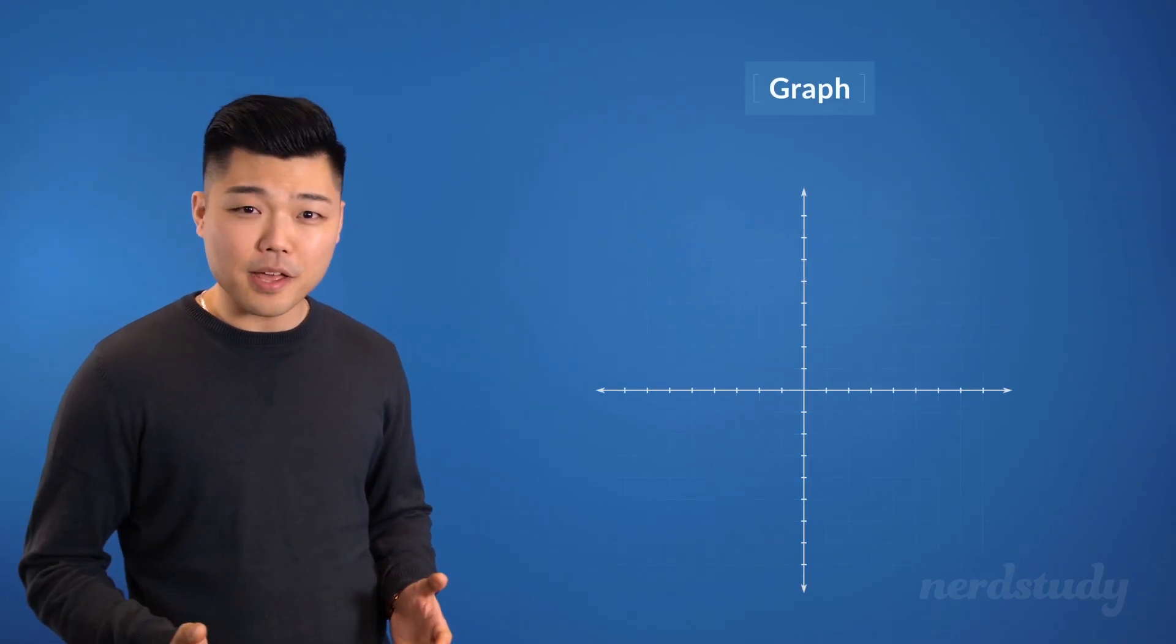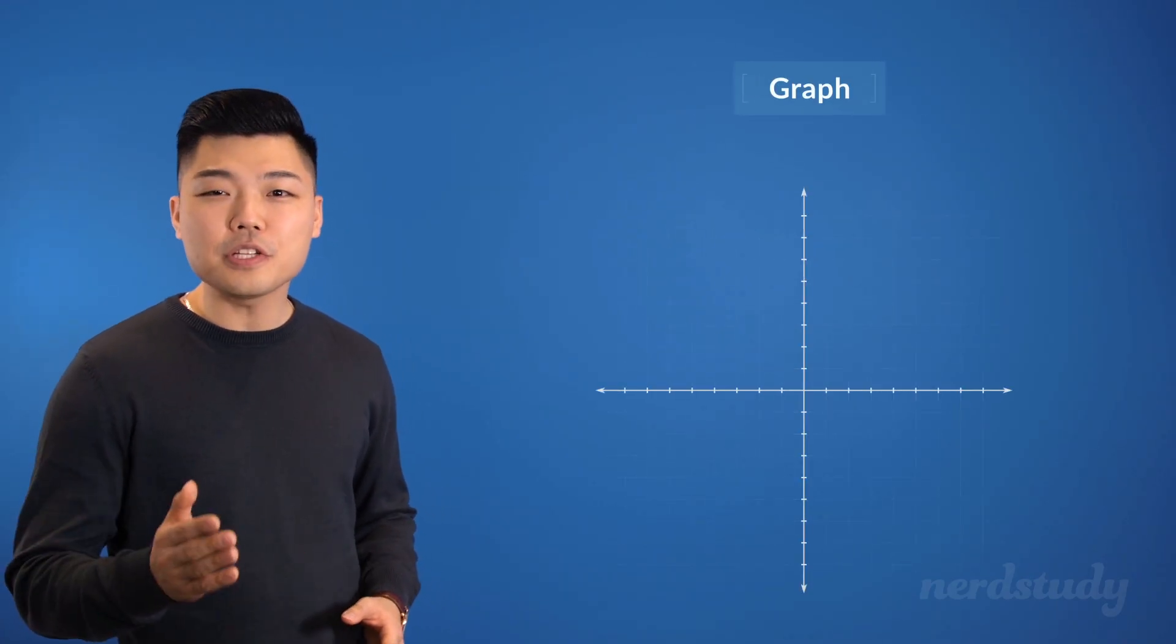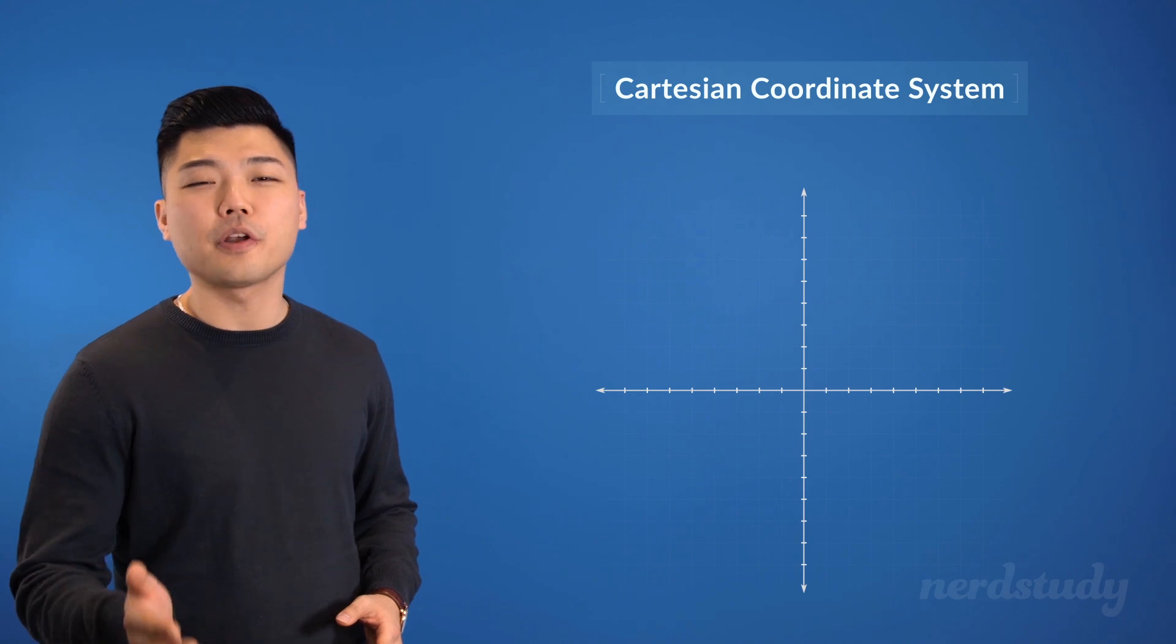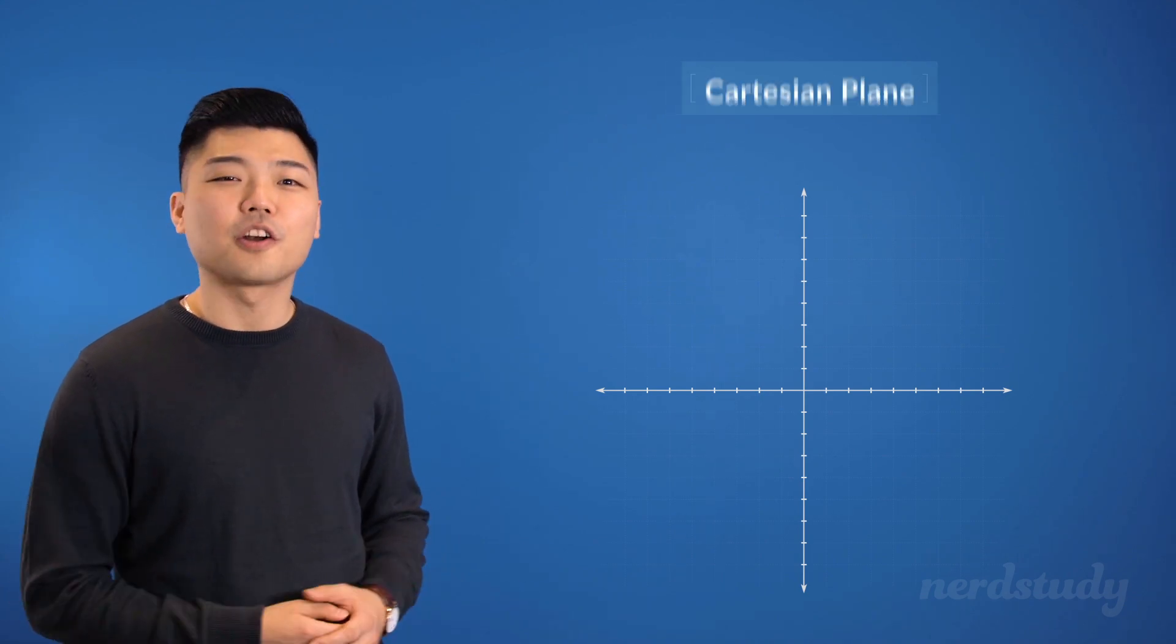So now that we realize that both the table of values and the equation are two ways to express the same information, let's open up our minds to yet another method of information that helps us to capture the same information but in a different way. We would commonly know this as a graph, but in math, we like to call a 2D graph a Cartesian coordinate system or a Cartesian plane.